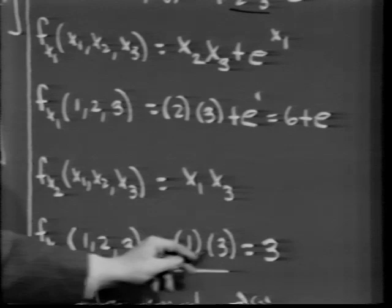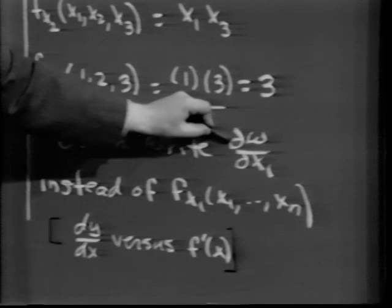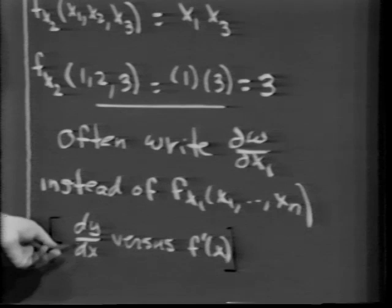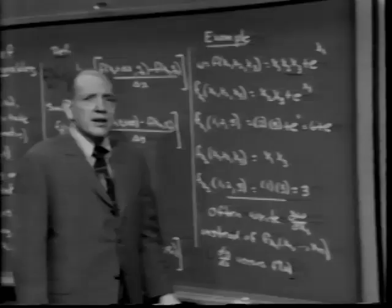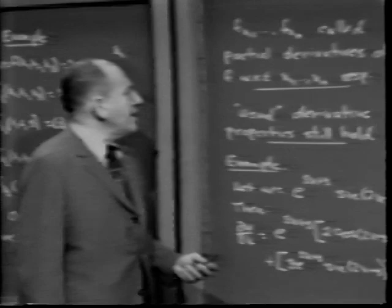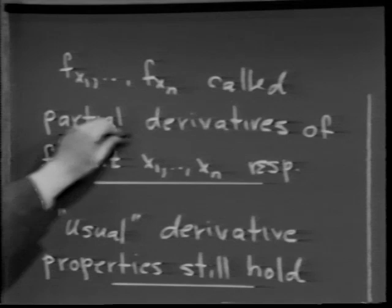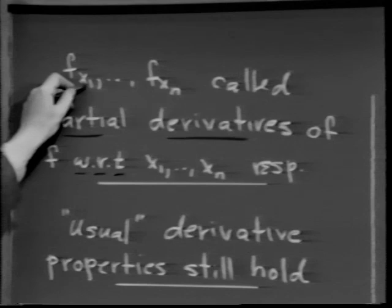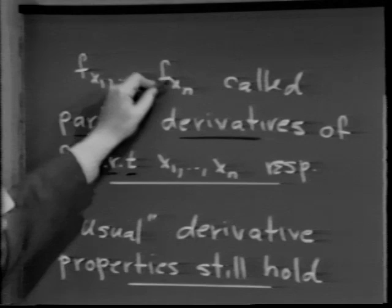Sometimes, instead of writing f sub x1, we write something like the regular derivative but with a script d — the partial derivative of w with respect to x1. This notation is similar to the relationship between dy/dx and f prime of x. If we have n independent variables x1 through xn and f is a function of those variables, then f sub x1 through f sub xn are called the partial derivatives of f with respect to x1 through xn respectively.